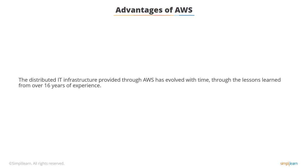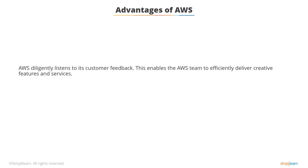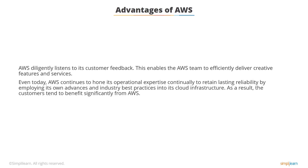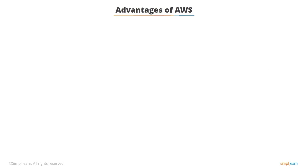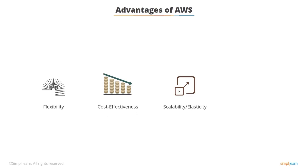The distributed IT infrastructure provided through AWS has evolved over time through lessons learned from over 16 years of experience. AWS diligently listens to its customer feedback, enabling the AWS team to efficiently deliver creative features and services. AWS continues to hone its operational expertise to retain lasting reliability by employing its own advances and industry best practices into its cloud infrastructure. As a result, customers benefit significantly from AWS through flexibility, cost-effectiveness, scalability and elasticity, and security.